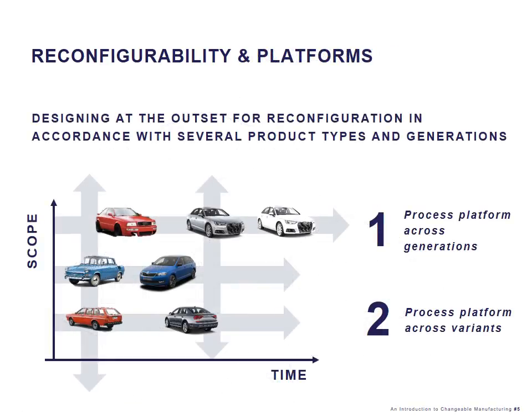Going a bit more into depth about reconfigurability and its relation to platforms and modularity, we usually distinguish between two types of reconfigurations: those that are conducted over time, and those that are conducted in regards to the scope of the product family. Looking into the car manufacturing industry, there are rapid introductions of new generations of the product, but there are also different variants — it could be different brands as depicted here.